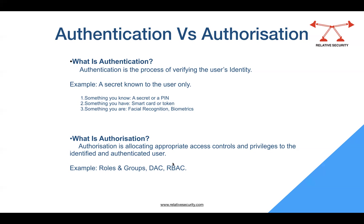The second method would be something you have — for example, a smart card or a token. The third would be something you are — for example, entering a building may require facial recognition, fingerprint impressions, or biometrics like a retina or eye scan. So for authentication, there are three methods: you can tell them the password, give them a smart card issued by a company, or use a biometric like the thumb punch used in most offices.